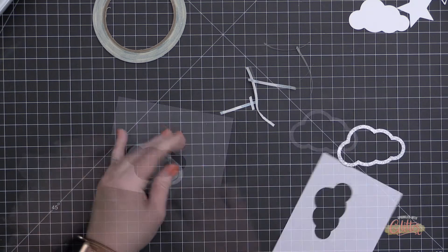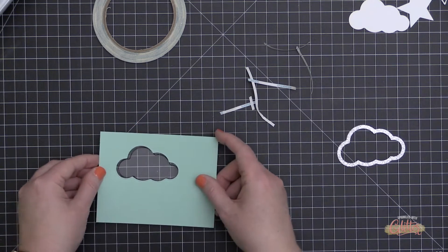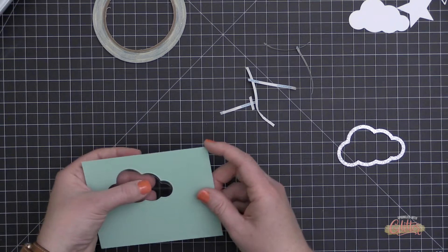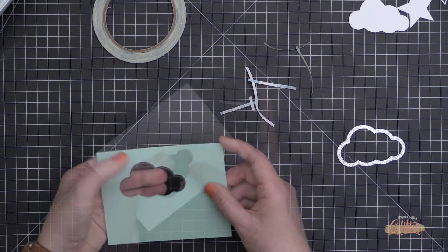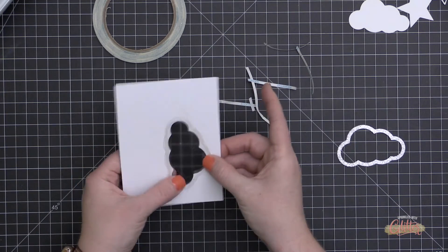I've gone ahead and put that score tape on that front lip, and I did add a little bit to the card back just because I had a little bit extra torn off and I thought, why not?